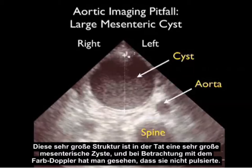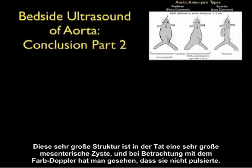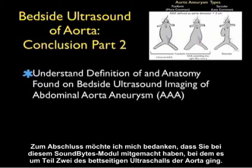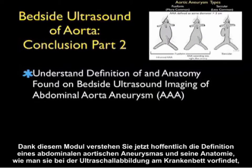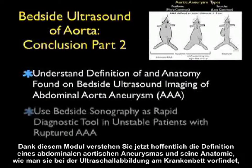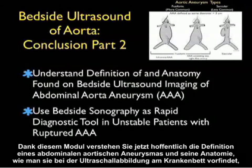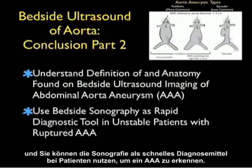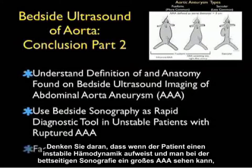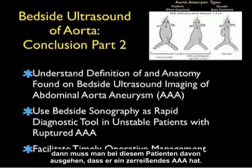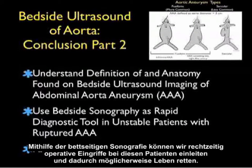In conclusion, thanks for joining me for this SoundBytes module going over Part 2 of bedside ultrasound of the aorta. Hopefully through this module you now understand the definition and anatomy found on bedside ultrasound imaging of an abdominal aortic aneurysm, and you can use bedside sonography as a rapid diagnostic tool for picking up a AAA. Remember that if the patient has unstable hemodynamics and a large AAA is seen on bedside sonography, that patient must be assumed to have a rupturing AAA. Using bedside sonography, we can facilitate timely operative management of these patients and possibly save a life.